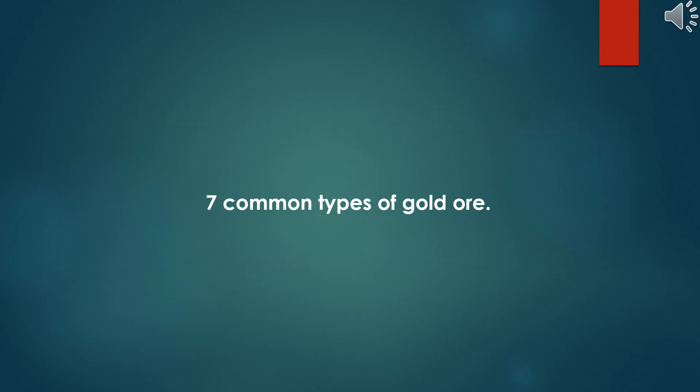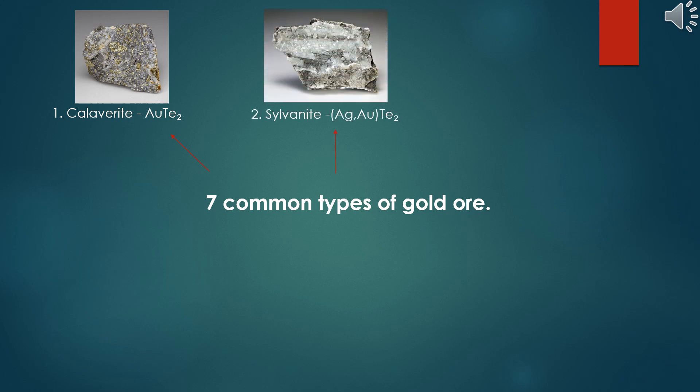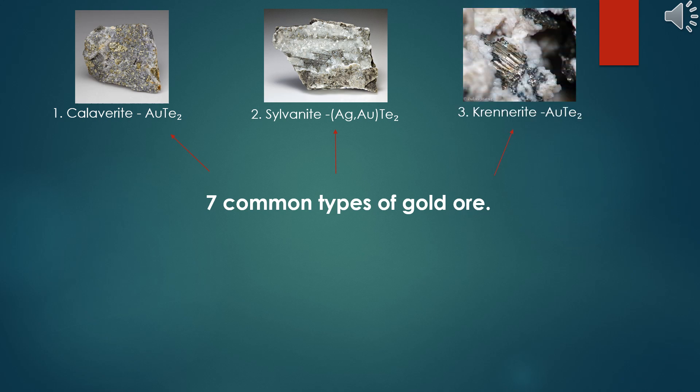There are many types of natural gold ore, but there are seven main common types. One: calaverite, a type of gold ore where gold is bonded with tellurium, with the chemical formula AuTe₂. Two: sylvanite, another gold telluride ore that contains both gold and silver, with the formula AgAuTe₂. Three: krennerite, similar to calaverite but with a different structure, also with the formula AuTe₂.